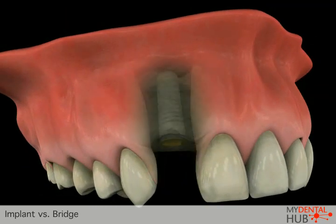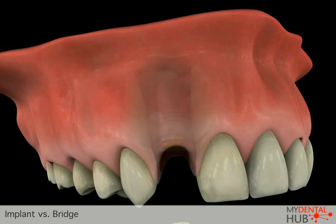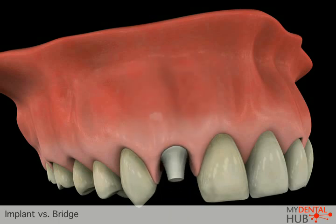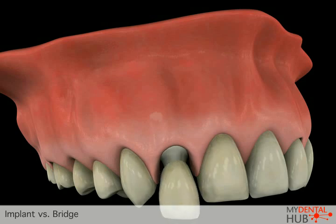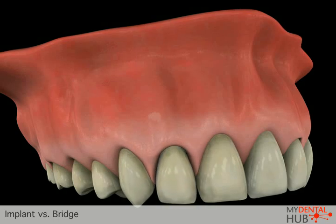An implant, on the other hand, is a more conservative restoration as it does not involve the surrounding teeth. The implant is placed into the jawbone, and a post is attached to the implant upon which a crown is placed.